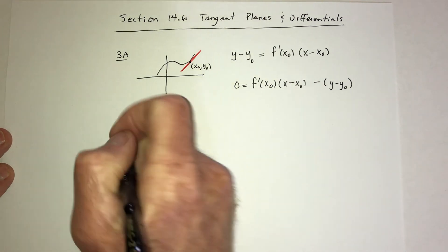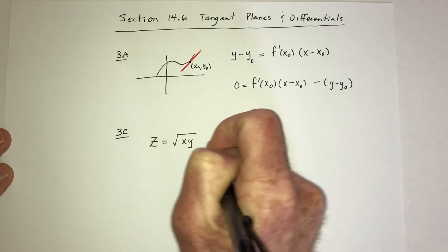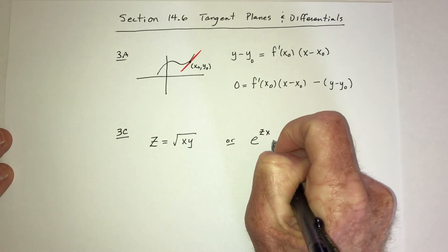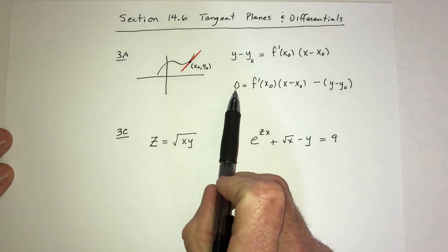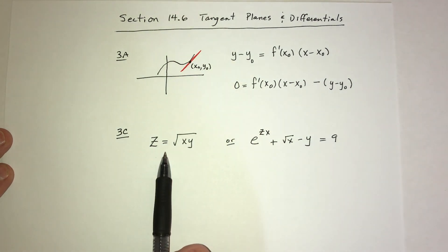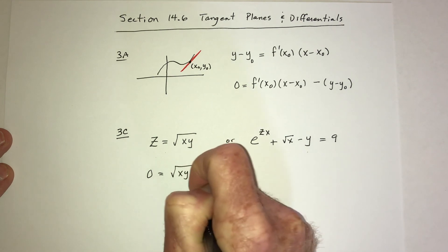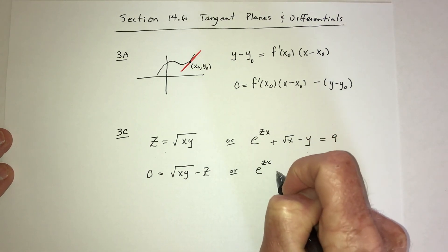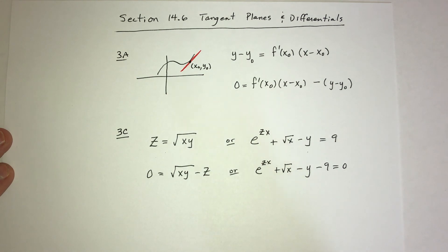In Math 3C, you could be given an explicit function like z equals the square root of x times y, or an implicit function like e^(zx) plus the square root of x minus y equals 9. Because our formula is set equal to 0, you should set them equal to 0 before you start taking derivatives — just subtract z from both sides, or subtract the 9.